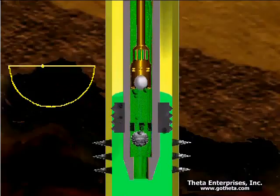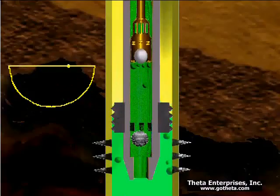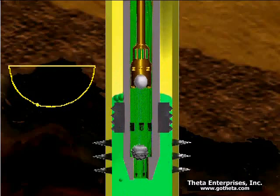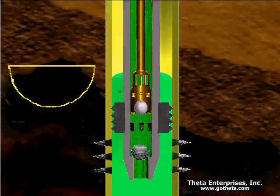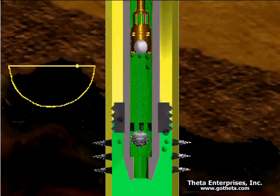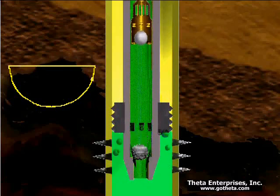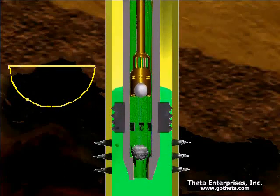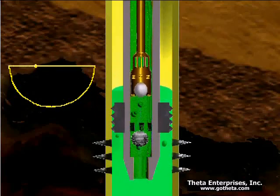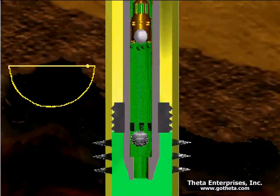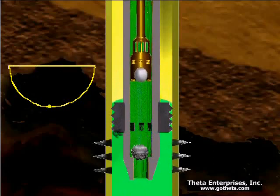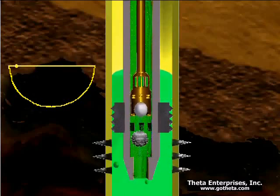There is also a standing valve leak animation — kind of the same thing, only reversed. On the downstroke, the fluid load is being put on the standing valve. But if it's leaking, the pressure inside the pump barrel doesn't go up as fast as it should, so there is a gradual reduction in load as compared to a full pump.